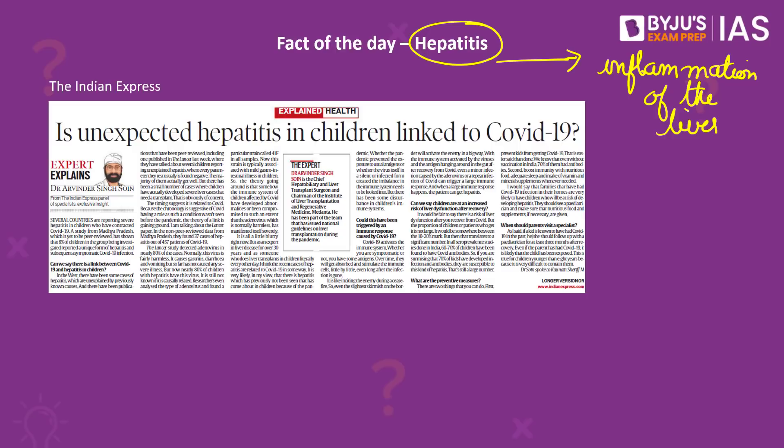Hepatitis is caused by a virus. There are five main strains of the hepatitis virus, referred to as types A, B, C, D, and E. While all of these cause liver diseases, they differ in important ways including modes of transmission, severity of the illness, geographical distribution, and prevention methods.